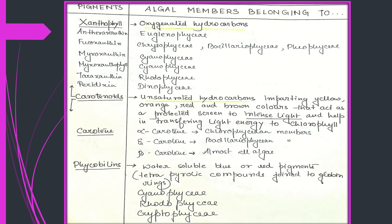Xanthophylls are oxygenated hydrocarbons found in groups such as Euglenophyceae, Cyanophyceae, Rhodophyceae, Dinophyceae, and others. The first xanthophyll in the table is antheraxanthin, found in Euglenophyceae. Fucoxanthin is found in Chrysophyceae, Bacillariophyceae, and Phaeophyceae. Myxoxanthin and myxoxanthophyll are both found in Cyanophyceae. Taraxanthin is found in Rhodophyceae, and peridinin is found in Dinophyceae.